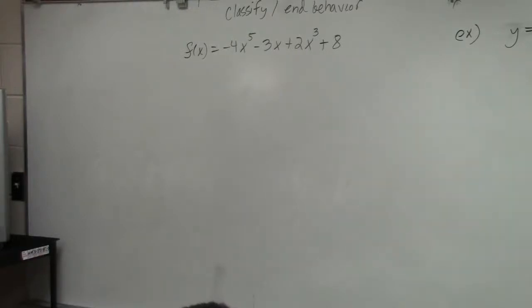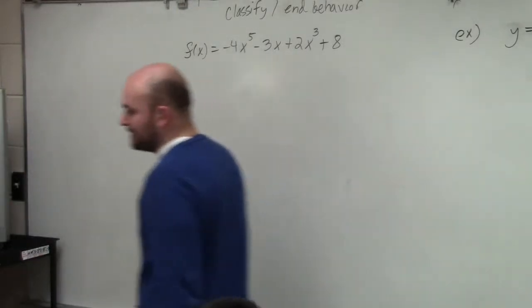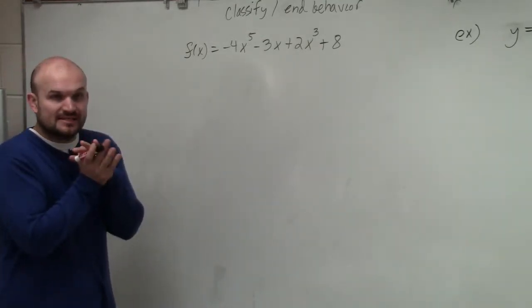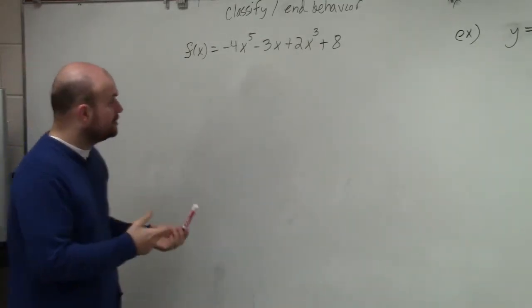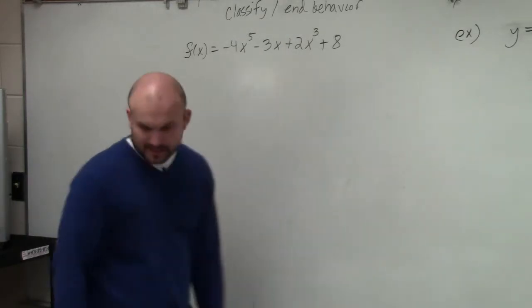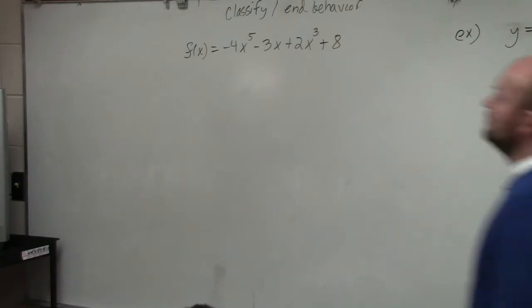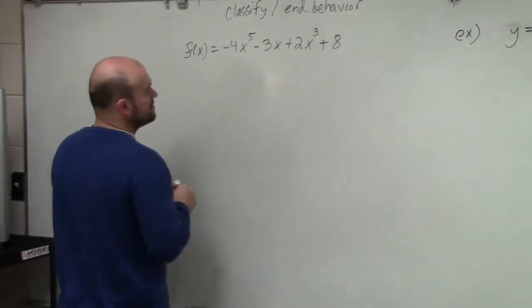So ladies and gentlemen, what we discussed in our notes for classifying and determining end behavior, the first thing we have to do is make sure that we rewrite our polynomials in descending order. So to do that, what we're simply going to do is we're going to write them from highest power down to the lowest power.